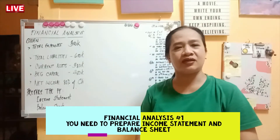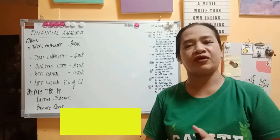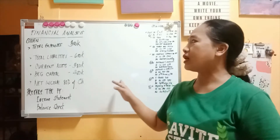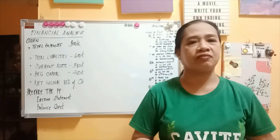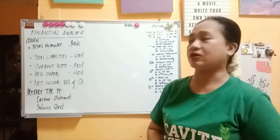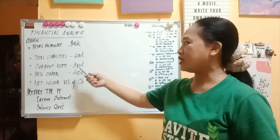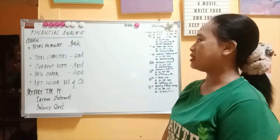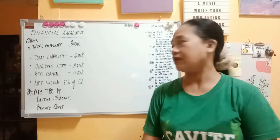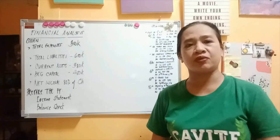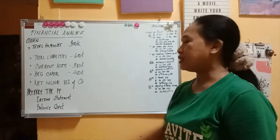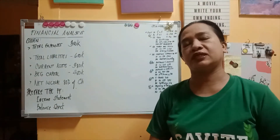Good morning everyone. Today we're going to discuss a financial analysis, assuming you already know the outright rules. Based on the given problem, we're going to present an income statement and balance sheet. The given values are: total expenses of 300,000, total liabilities of 600,000, current assets of 380,000, beginning capital of 480,000. Since it is not stated whether this is a corporation, sole proprietorship, or partnership, we assume it is a sole proprietorship, so we do not deduct any taxes.